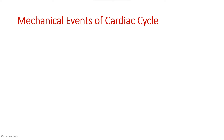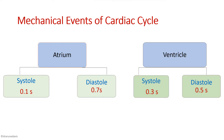The mechanical events in the cardiac cycle include atrial systole and diastole, as well as ventricular systole and diastole. The total duration is 0.8 seconds, of which atrial systole is 0.1 seconds and atrial diastole is 0.7 seconds. Ventricular systole is 0.3 seconds and ventricular diastole is 0.5 seconds.